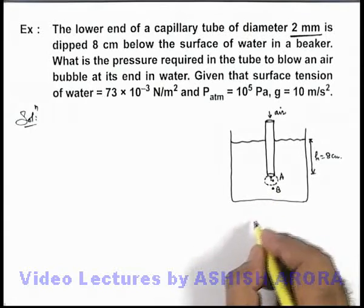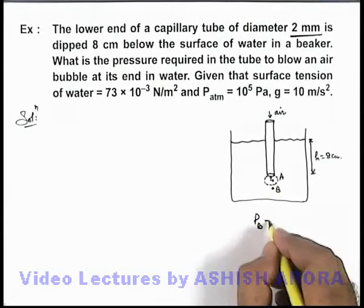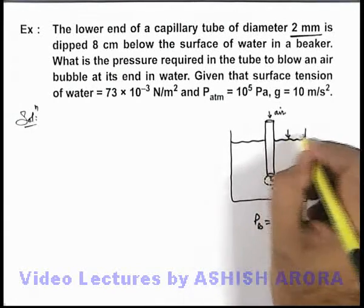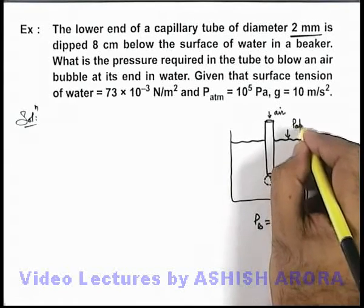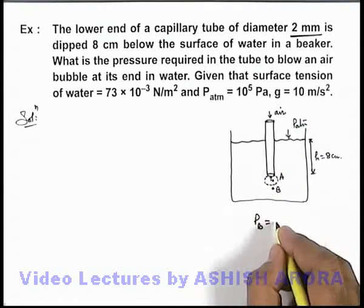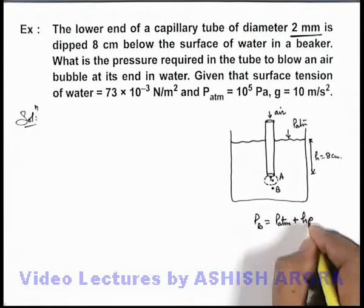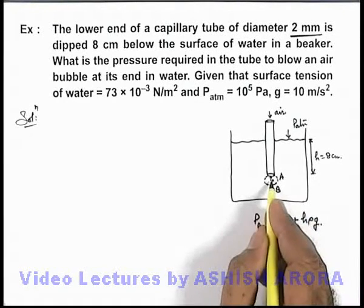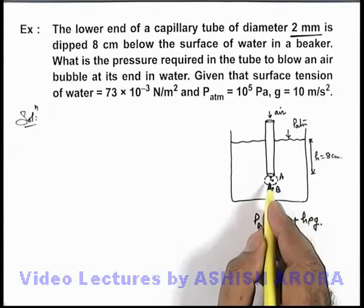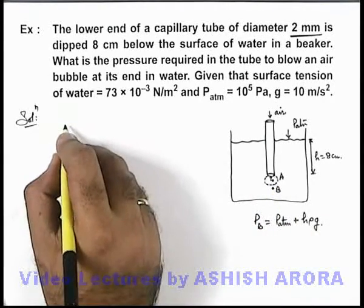We can say here pressure at point B will be, on the water, it is atmospheric pressure acting. And at a depth h at point B, we can write the pressure will be P atmospheric plus h ρ g. And at point A which is inside the air bubble, we can write, now to blow the air bubble...